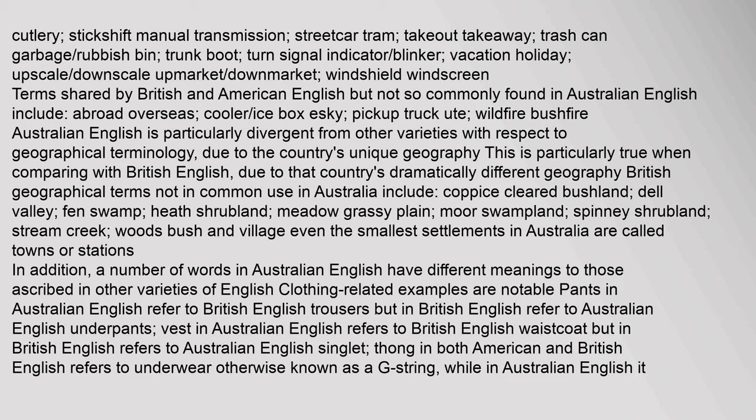Terms shared by British and American English but not commonly found in Australian English include: 'abroad' (overseas), 'cooler/ice box' (esky), 'pickup truck' (ute), and 'wildfire' (bushfire). Australian English is particularly divergent from other varieties with respect to geographical terminology due to the country's unique geography. British geographical terms not in common use in Australia include coppice, dell, fen, heath, meadow, moor, spinney, stream, and village — even the smallest settlements in Australia are called towns or stations.